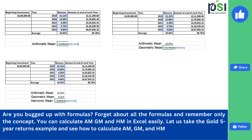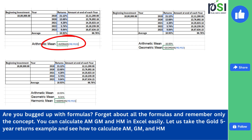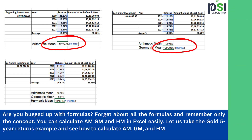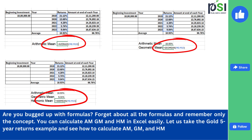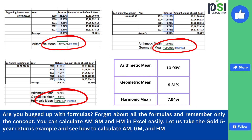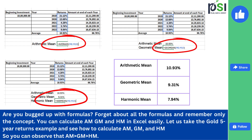The Excel formula for arithmetic mean is simply AVERAGE — select the last 5 years data and you get the number. For geometric mean, type GEOMEAN and select the 5-year returns data. For harmonic mean, type HARMEAN and select the data. Results: arithmetic mean is 10.93%, geometric mean is 9.31%, and harmonic mean is 7.94%. You can observe that arithmetic mean is greater than geometric mean, and geometric mean is greater than harmonic mean.